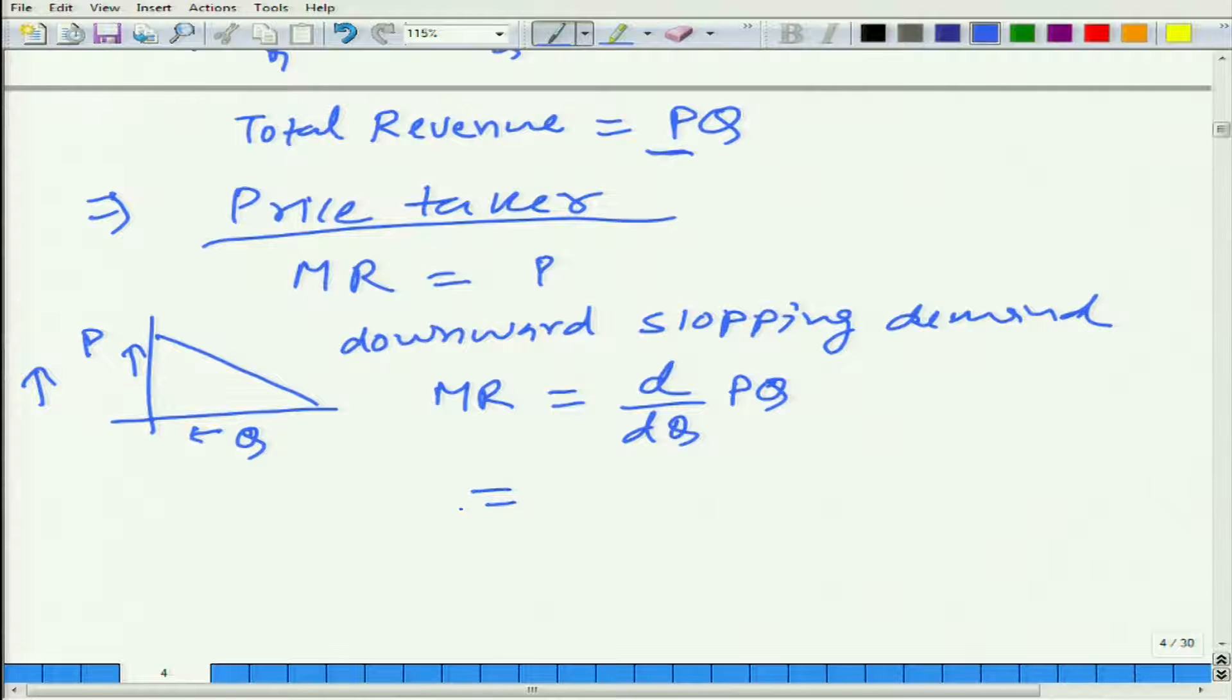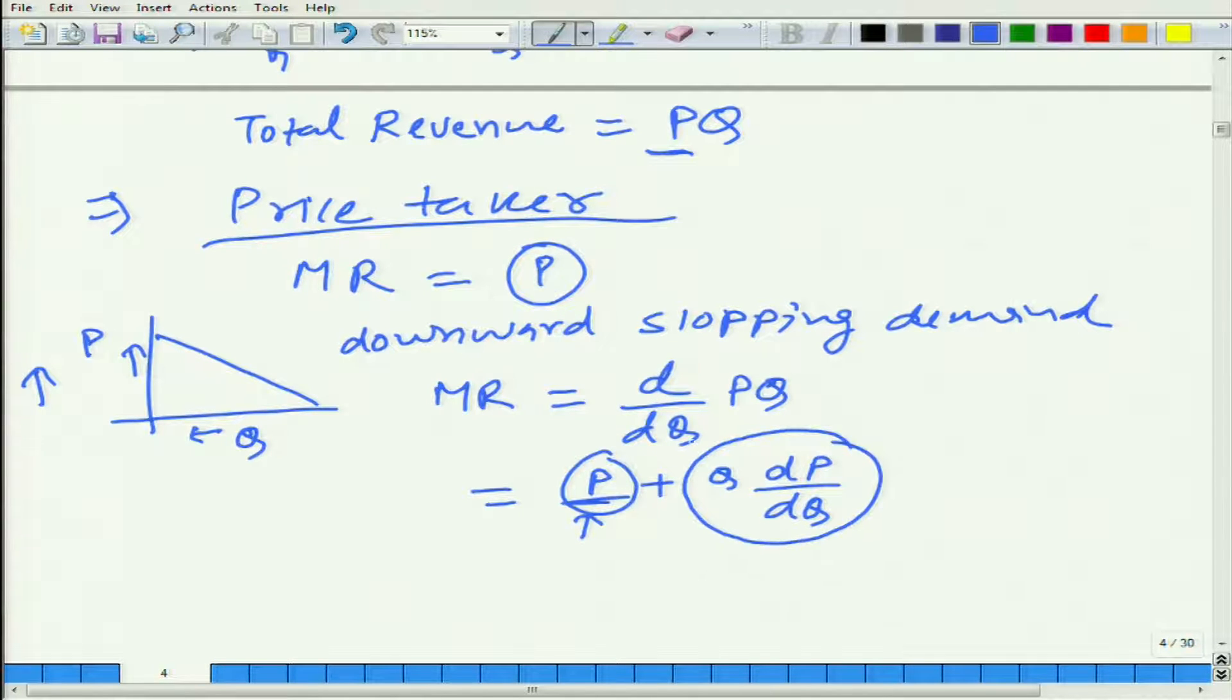The firm will get a little more because it is selling one more good, but it will get a little less for all the goods sold because the price is lesser now. So in this case, what is going to be the marginal revenue? If we use calculus, we get very clearly here P plus dP/dQ times Q. This P is the same as before because this firm is able to sell one more unit, so it will get P.